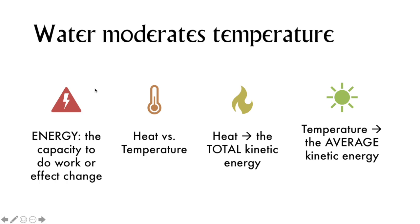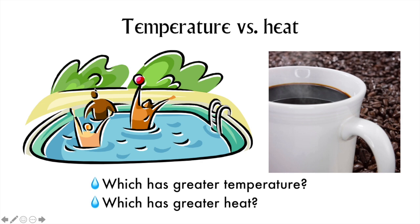Heat is a measure of the total kinetic energy of all the molecules in a sample. Temperature is a measure of the average kinetic energy of molecules in a sample. Here is an example to demonstrate the difference. A swimming pool and a hot cup of black coffee. Yum. One of them has greater temperature, and one of them has greater heat. Which one is which? So a hot cup of coffee has greater temperature, while the swimming pool, full of not-quite-so-hot water, has greater heat, just because there's more stuff there, more molecules, so a higher total kinetic energy.